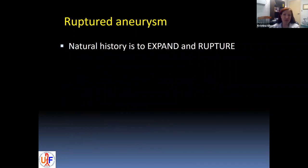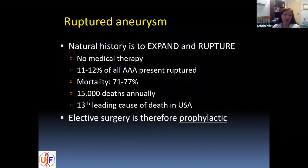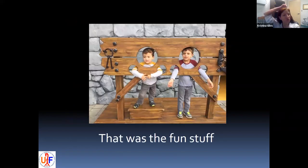The natural history is to expand and rupture. There's no medical therapy for aneurysms. About 11% to 12% of all aneurysms present already ruptured, and the mortality with rupture is very high — upwards of 80% — representing about 15,000 deaths annually, making it about the 10th to 13th leading cause of death in the USA. Elective surgery is therefore a prophylactic operation because these are usually asymptomatic until the point where they rupture.